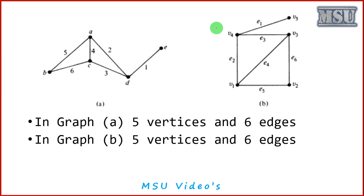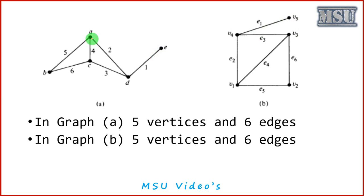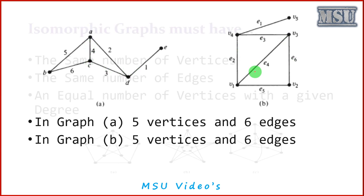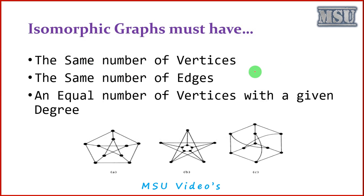Parallelly, we have corresponding vertices. The role of E here corresponds to the role of V5 — both have degree value 1. Similarly, vertices A, C, D have their corresponding matching degree values. So these graphs are said to be isomorphic. You can check with the examples.